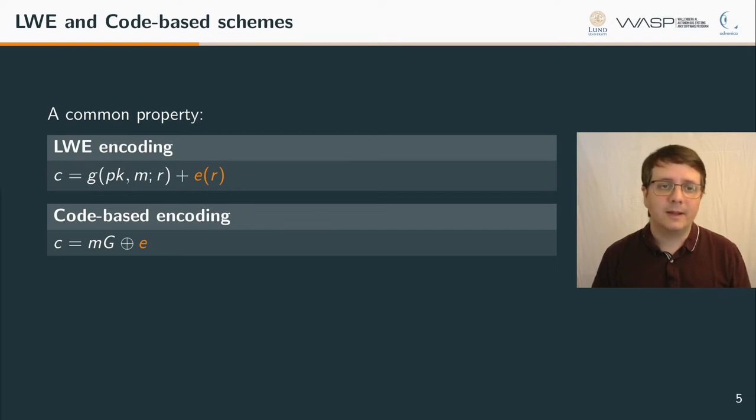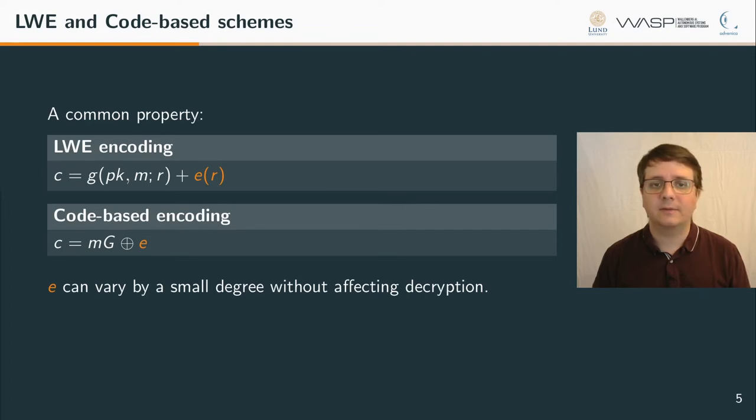This model is sufficient for some use cases but not for all. For other use cases a stronger model is desired and IND-CCA here differs from the CPA models in that the adversary now has access to a decryption oracle which answers with the corresponding plaintext to any ciphertext except for the specific ciphertext used in the challenge of course. In the NIST PQC project many submissions use the same approach to construct a CCA secure KEM from a CPA secure PKE. This approach makes use of the Fujisaki-Okamoto transform.